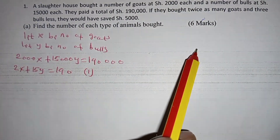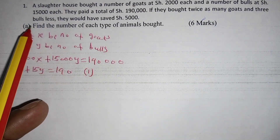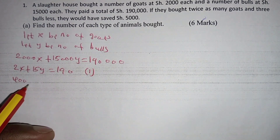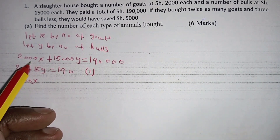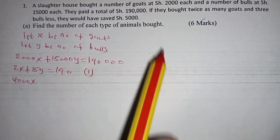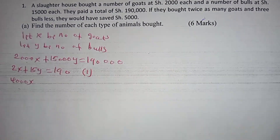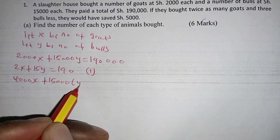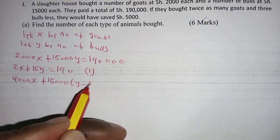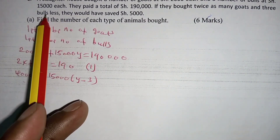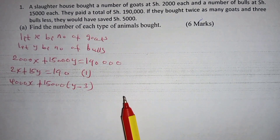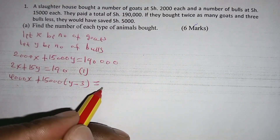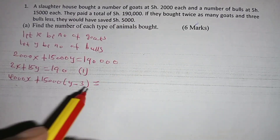We are told that if they bought twice as many goats, the cost per goat becomes four thousand — twice of two thousand is four thousand. The bulls are three fewer, meaning the number of bulls becomes y minus three, so the bulls' cost is fifteen thousand multiplied by (y minus three).